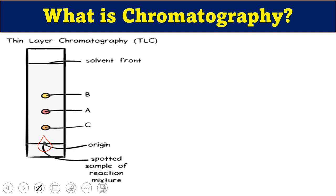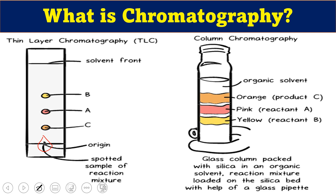Alternatively, a glass column can be used as shown on the right side of the picture. A glass column with a stopcock at the bottom is used, with a cotton plug inserted at the bottom and the column packed with silica gel prepared in organic solvent. Once packed, the mixture of organic components is added to the top. Depending on their movement, the components A, B, and C slowly move toward the bottom of the column and are separated—first B is eluted, then A, then C. This is basically how chromatography works.